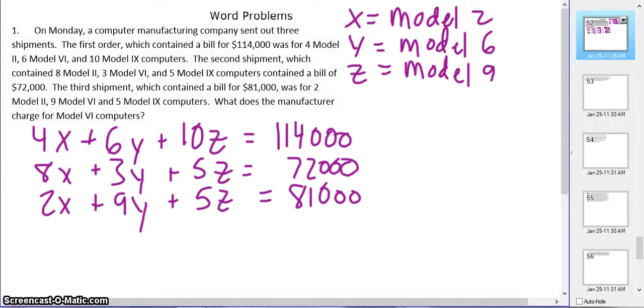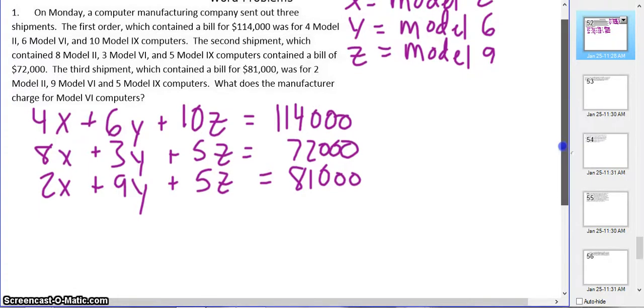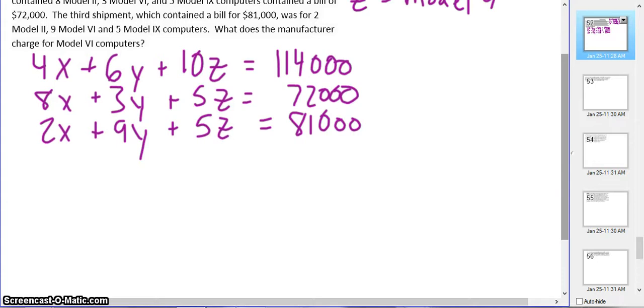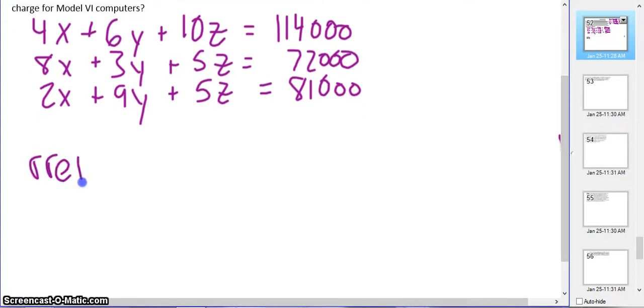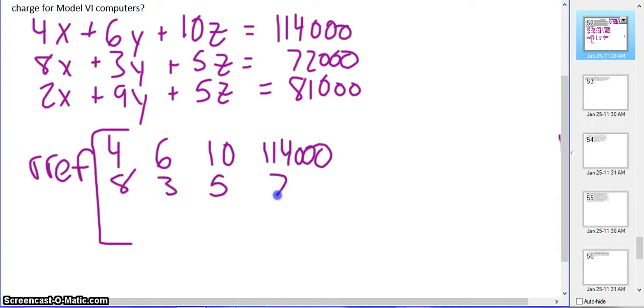Our second step is to actually write it in matrix form. Now that we know how to use RREF, that's exactly what we're going to do. Everything that goes in your calculator goes on your paper. So we're going to do RREF, and we have 4, 6, 10, $114,000. We got 8, 3, 5, and $72,000, and 2, 9, 5, $81,000. So we're going to type in the calculator just like that.